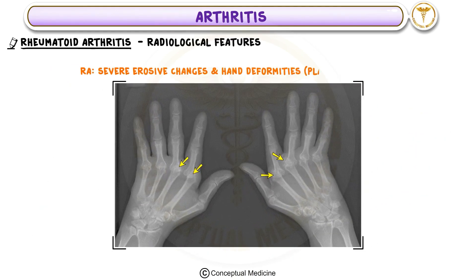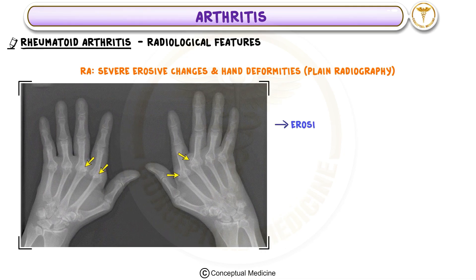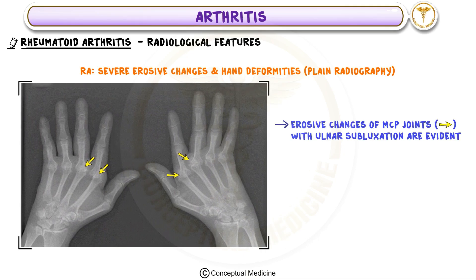Severe erosive changes and hand deformities in rheumatoid arthritis: plain radiography demonstrates erosive changes in the metacarpophalangeal joints with ulnar subluxation.